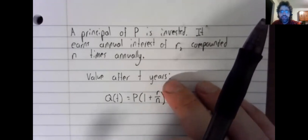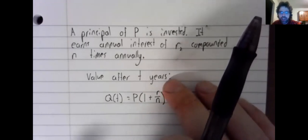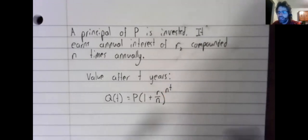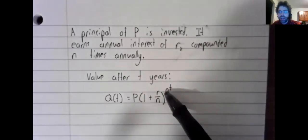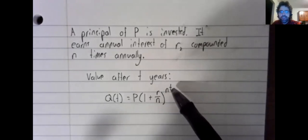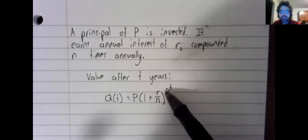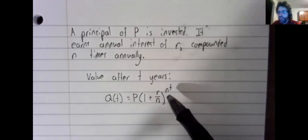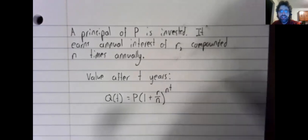If T is one, we've compounded interest N times. If T is two, two years have passed. We compound interest N times per year, then we compound interest N times.